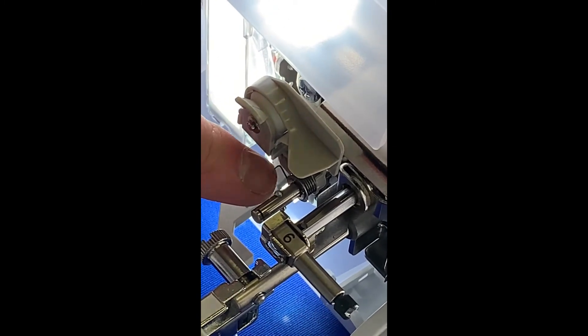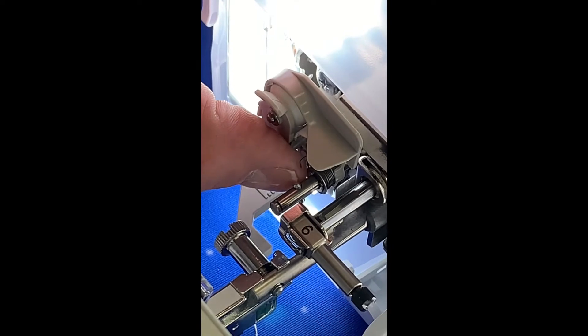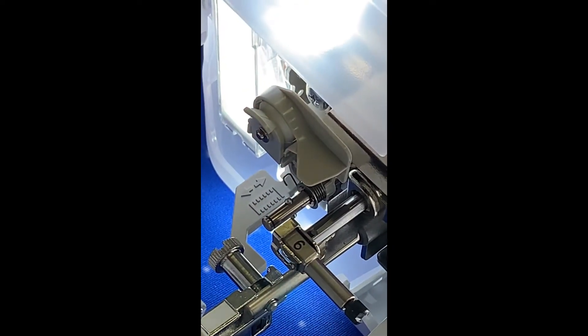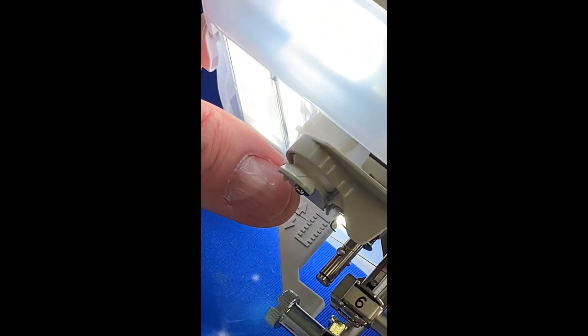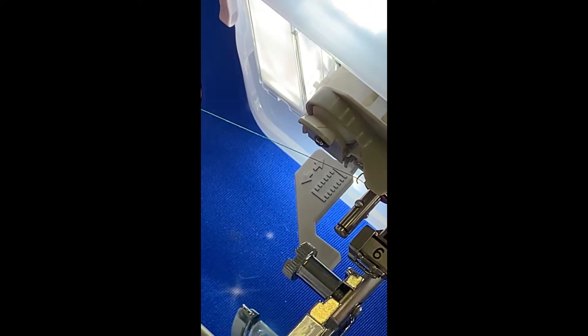So we can see the spring here before we actually put the needle threader back on. This needs to be pulled back to the right hand side. So the only way I can think of doing this without using a spring puller is to get some thread and put the thread underneath the spring like this.